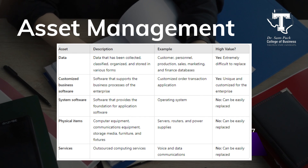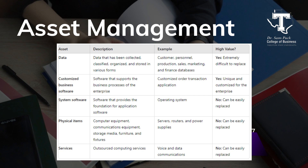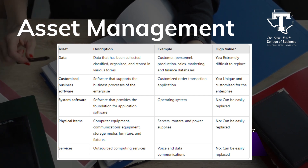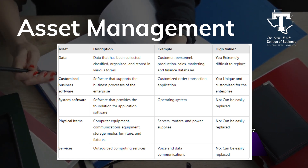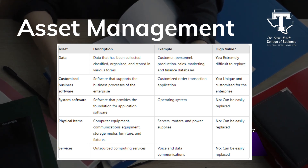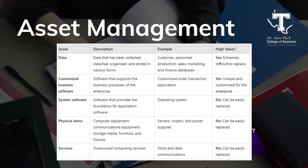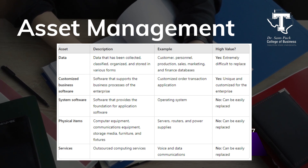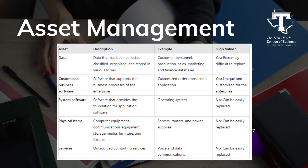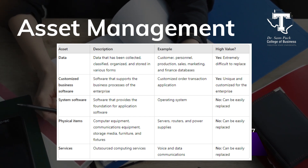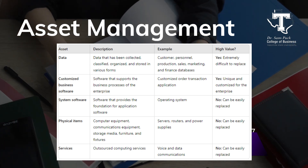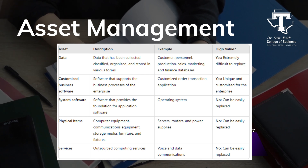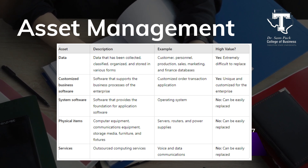Now let's break down the different types of assets in an organization. Data includes all critical information like customer records and financial data — it's high value because it's hard and expensive to replace. Customized business software is built specifically for your company's needs and is unique and hard to replace. System software, like operating systems, helps other applications run and is easier to replace than customized software. Physical items like computers and routers are tangible and generally easier to replace. Services such as outsourced cloud storage or communication are crucial but more replaceable compared to the other assets.